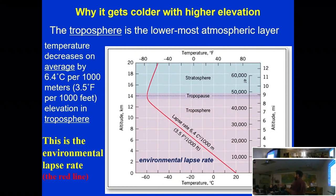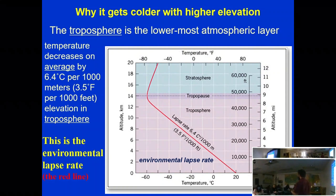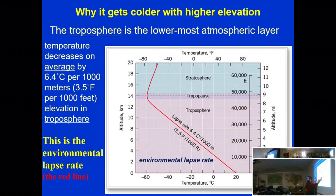Will the ELR be the same at the North Pole as it is here? No — the North Pole has very different weather conditions. Will the ELR be the same in south Texas in winter as in summer? No — it just depends on the place and the day. Typically, the global average ELR is about 6.4 degrees Celsius per thousand meters, or roughly 3.5 degrees Fahrenheit per thousand feet.